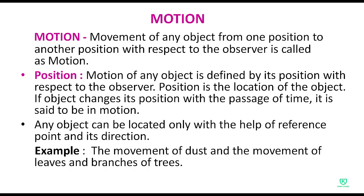Any object can be located only with the help of a reference point and its direction. Koi bhi object located tabhi ho sakta hai jab uska koi reference point ho aur koi direction ho. Example — the movement of dust particles and the movement of leaves and branches of trees. Patton ne apni position change ki toh obviously motion hua. Dust particles bhi move kar rahe hain — isse hum kehte hain simple motion.